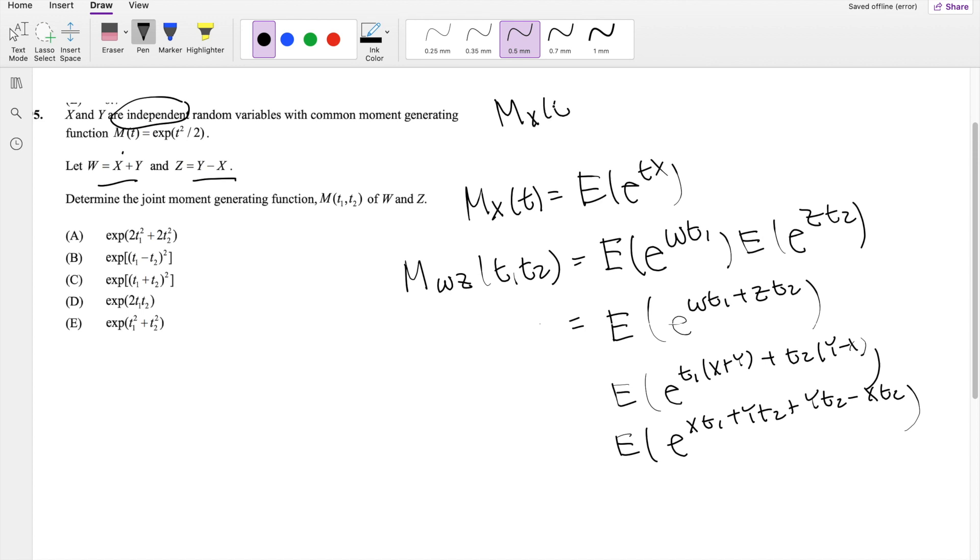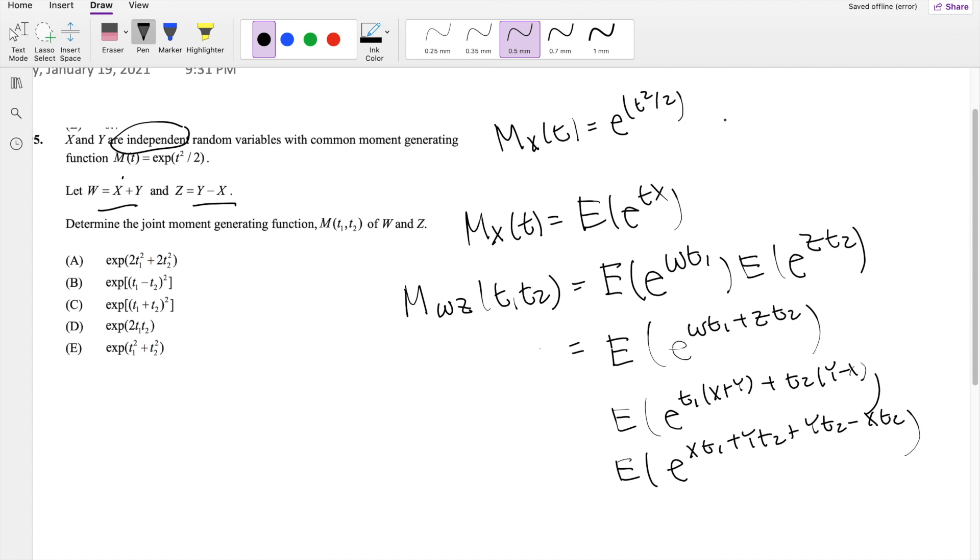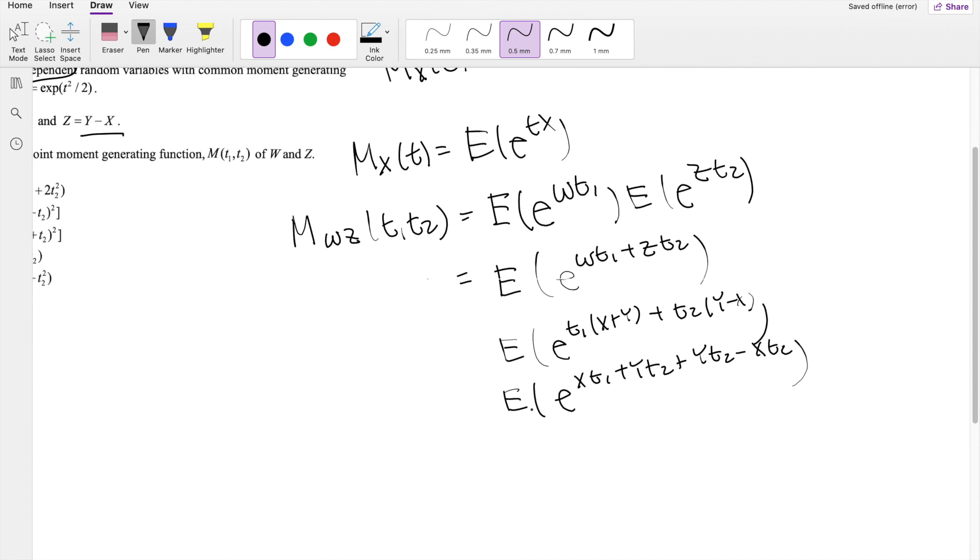And we do know what the moment generating functions for X and Y are. We know that M_X(T) is equal to E to the T squared over 2. And for Y, it's the same thing. They both carry the same moment generating function, E to the T squared over 2.